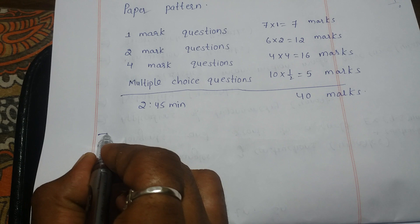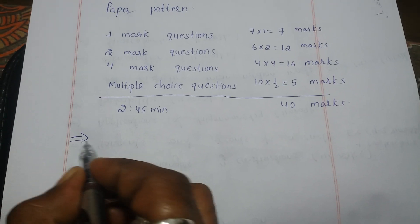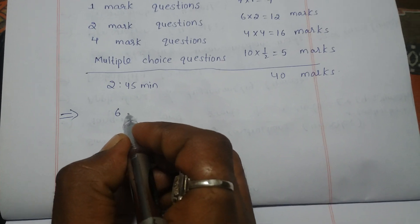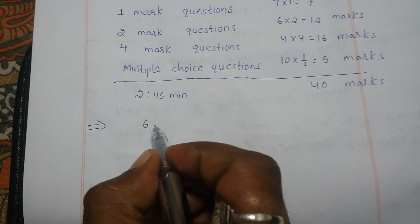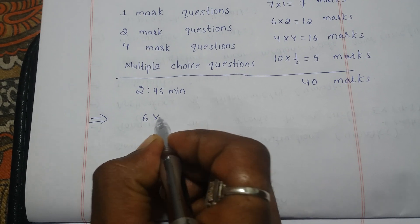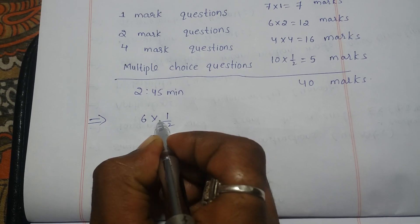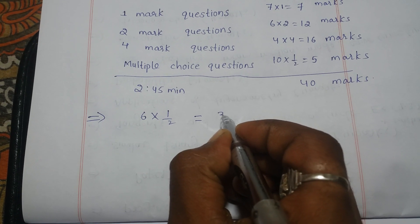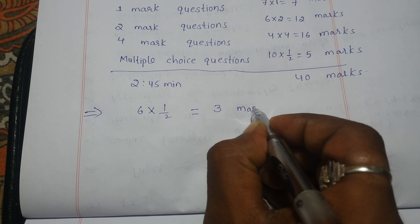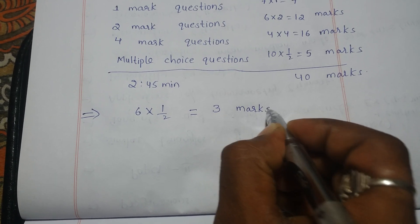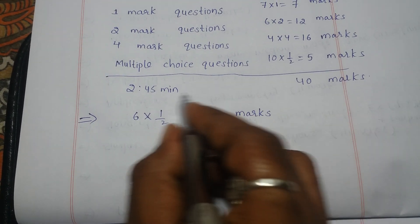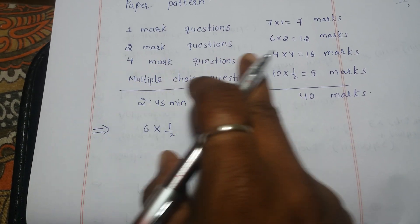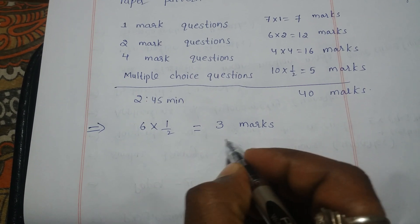So how to get minimum marks from the question paper? We have six two-mark questions. If you write something for attempting, there is a chance of getting half mark for each question. Six into half is three marks — just for attempting and writing the given statement, you will get three marks from the two-mark questions.